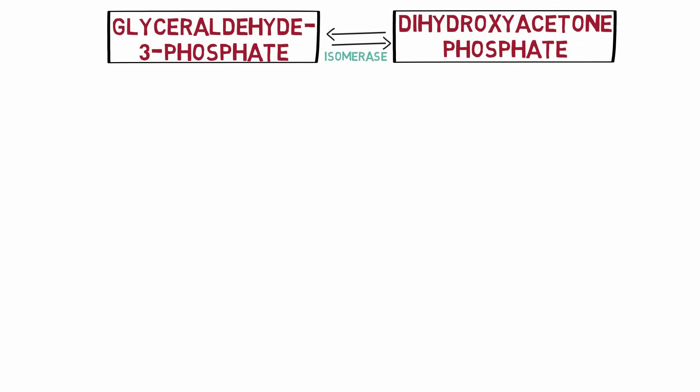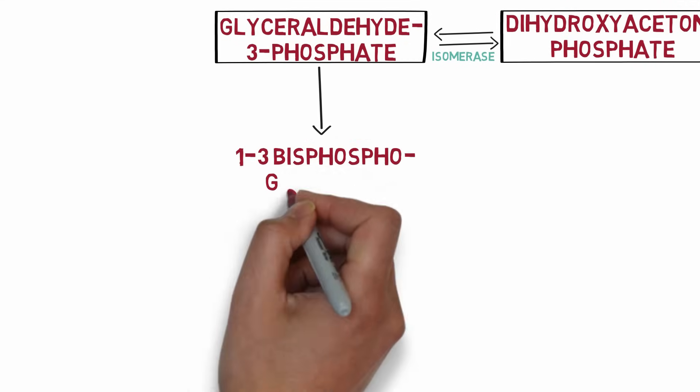Glyceraldehyde 3-phosphate and dihydroxyacetone phosphate are isomers and can be interconverted by the enzyme isomerase. Since glyceraldehyde 3-phosphate is further utilized in glycolysis, the equilibrium is always towards glyceraldehyde 3-phosphate. Keep in mind that every glucose molecule splits into two molecules, so every reaction of the second phase happens twice and produces twice the product.